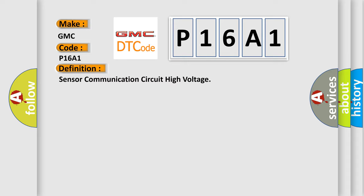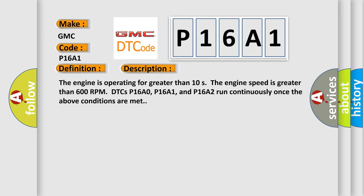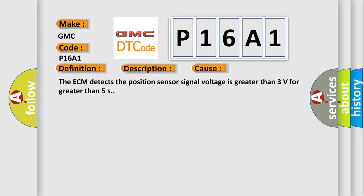Here's a short description of this DTC code. The engine is operating for greater than 10 seconds. The engine speed is greater than 600 rpm. DTCs P16A0, P16A1, and P16A2 run continuously once these conditions are met. This diagnostic error occurs when the ECM detects the position sensor signal voltage is greater than 3 volts for greater than 5 seconds.